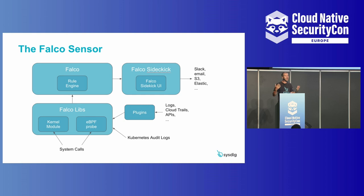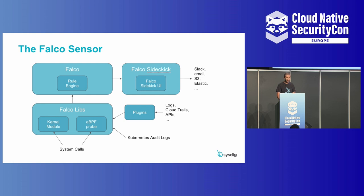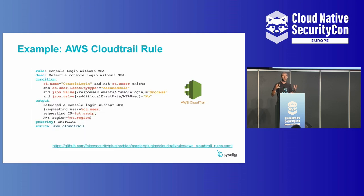What we've done recently as the Falco community is extended Falco. This diagram shows essentially the flow of information from Falco. Historically, Falco captures system calls using either a kernel module or an eBPF probe. We've extended it through a plugin system so that it's now possible to collect from arbitrary sources. We've created, for example, a plugin for CloudTrail. Thanks to this plugin, you can very easily take Falco, connect it automatically to your source of logs in CloudTrail, and without having to copy the data or put them in a SIEM tool or a logging tool, Falco in real-time can see a stream of events that CloudTrail is producing.